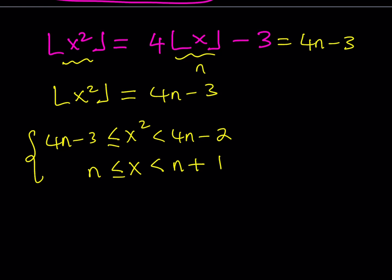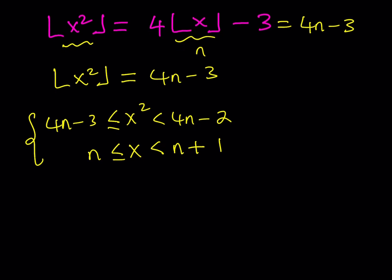We now have a system of inequalities. Our goal is to solve for x, and n is an integer, so we need to find the appropriate values of n. Since we know x is positive, I'm going to square both sides of the inequality n ≤ x < n+1. That gives x squared between n squared and (n+1) squared — for example, if x is between 3 and 4, then x squared is between 9 and 16.